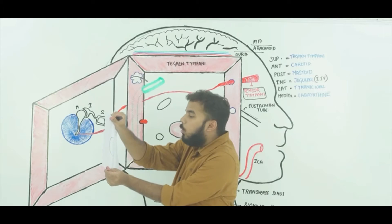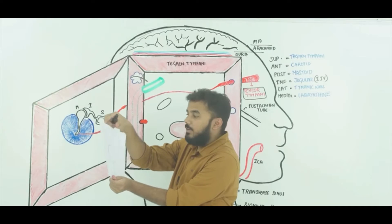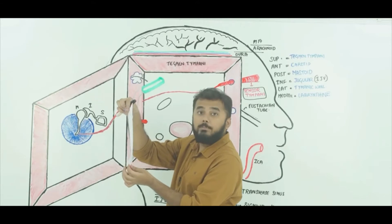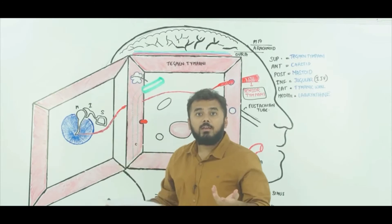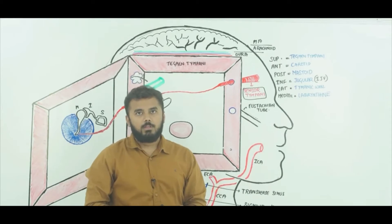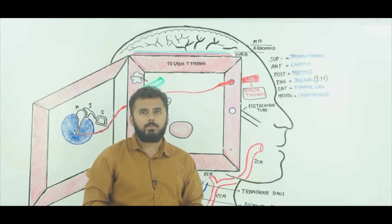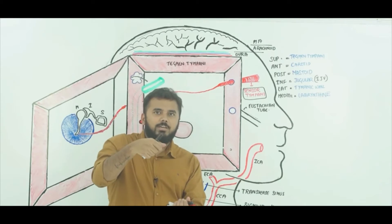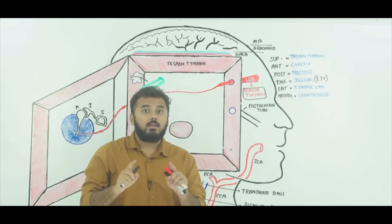Even if I blow the air, the tympanic membrane is not moving. But previously, when I blew the air, the tympanic membrane was moving. Now the tympanic membrane is stiff because of this tensor tympani muscle. So the tensor tympani muscle causes tension — it develops tension within the tympanic membrane, or it stretches the tympanic membrane.